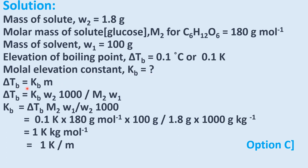To find the molar elevation constant Kb, apply the formula: delta Tb = Kb × molality, or delta Tb = Kb × (mass of solute / molar mass of solute) × (1000 / mass of solvent in grams). Rearranging: Kb = (delta Tb × M2 × W1) / (W2 × 1000).